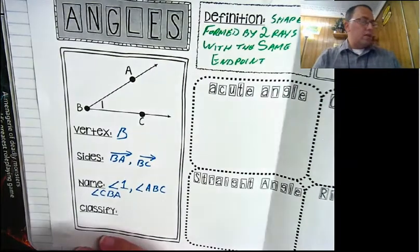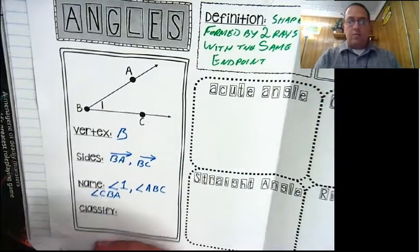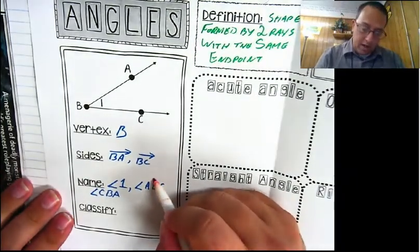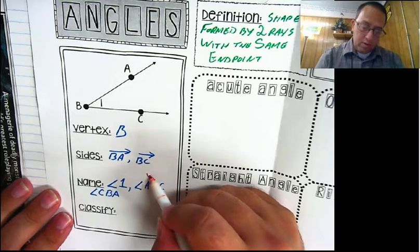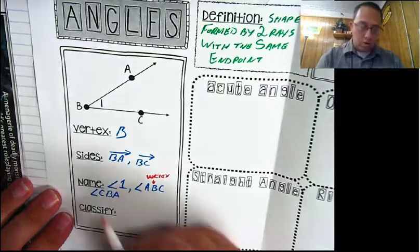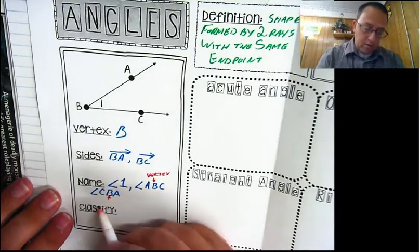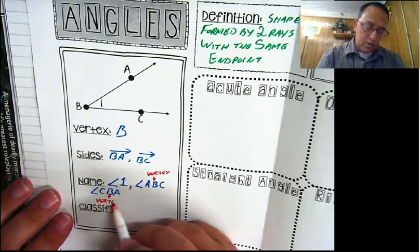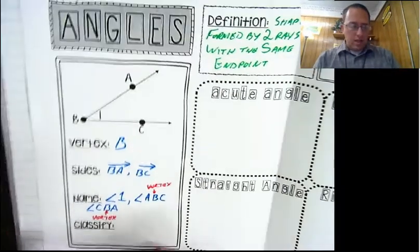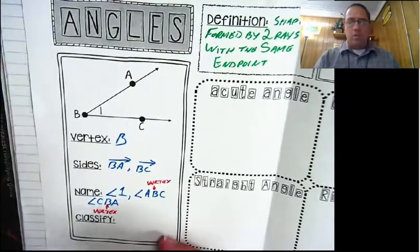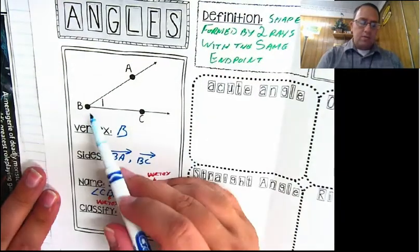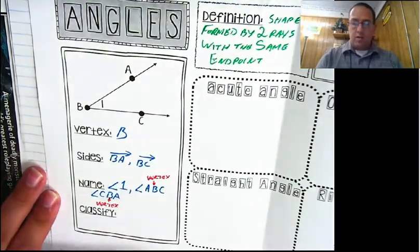What this means is that every time you name the angle by the points on the angle, you have to have the vertex right here in the middle. The vertex will always be that middle letter. You can always name it by a point on one side of the angle, the vertex, and a point on the other side of the angle.